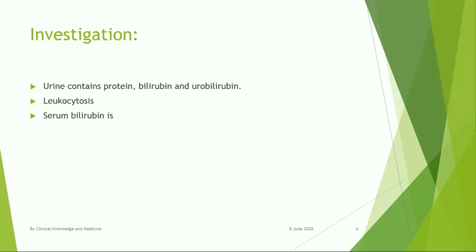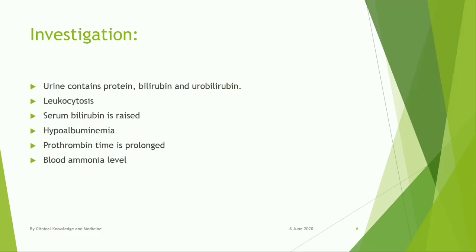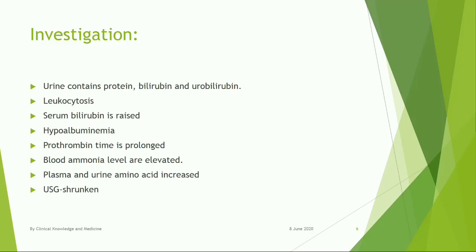Investigations: Urine contains protein, bilirubin, and urobilinogen. Leukocytosis is present. Serum bilirubin is raised. Hypoalbuminemia is noted. Prothrombin time is prolonged. Blood ammonia levels are elevated. Plasma and urine amino acids are increased.